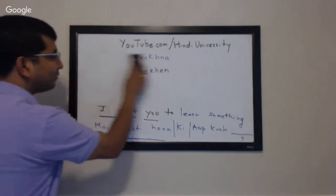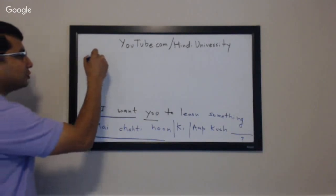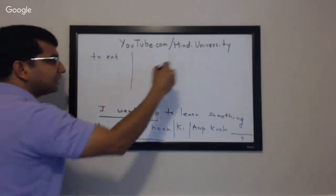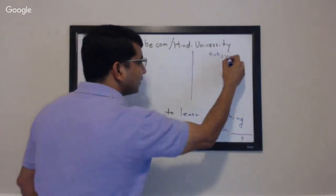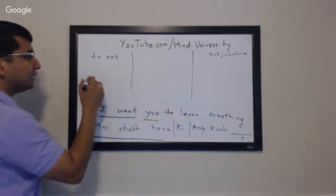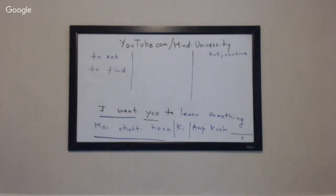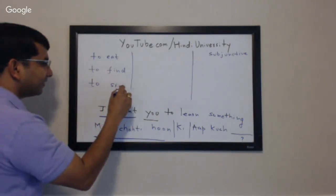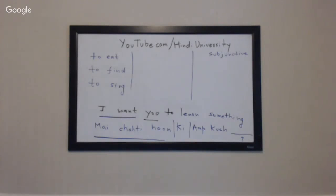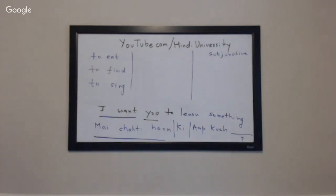Let me write down three practice words. First, 'to eat' — write the infinitive form ending in 'na,' then the subjunctive form. Second, 'to find.' Third, 'to sing.' Write them down in the chat. To eat is 'khana.' Think about the future indefinite: 'khayenge' or 'khaoonga.' Remove the 'ga,' 'ge,' or 'gi' endings and you get the subjunctive stem. Same approach for 'to find' and 'to sing.'